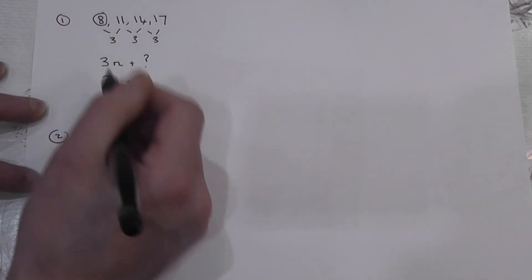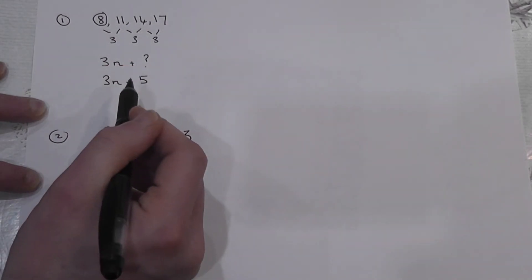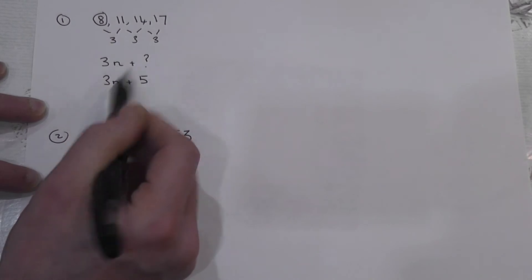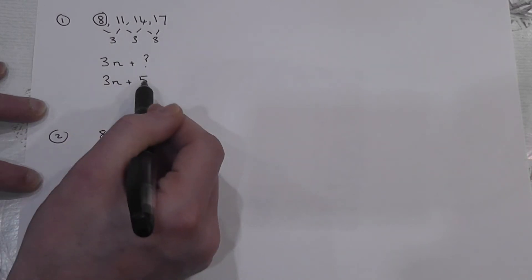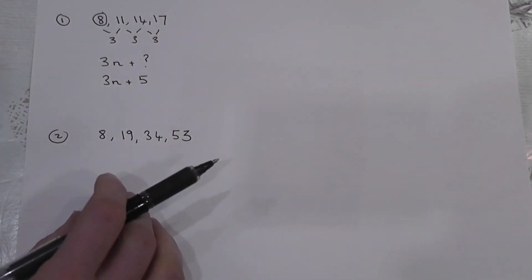So again the number next to the n is always the common difference. We have to add or subtract some number and the numbers always add to make the first term in the sequence.